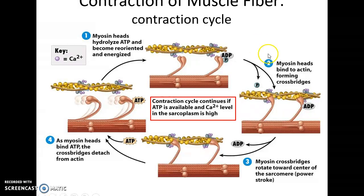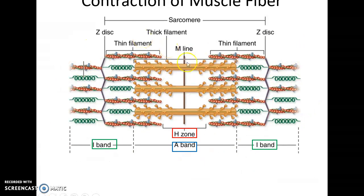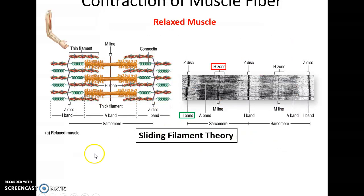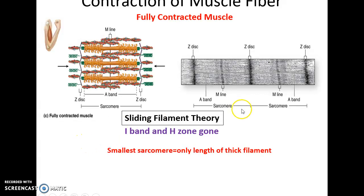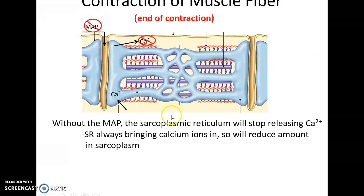The contraction cycle continues as long as there is plenty of ATP and calcium ion levels remain high enough in the sarcoplasm. When relaxed, the sarcomere shows the H zone, I bands, and A band as expected. As the muscle contracts, myosin pulls thin filaments toward the M-line, shortening the H zone and I band. In a fully contracted muscle, there is no I band and no H zone — this is sliding filament theory: filaments slide across each other to shorten the sarcomere, which shortens the myofibrils and the muscle fiber.